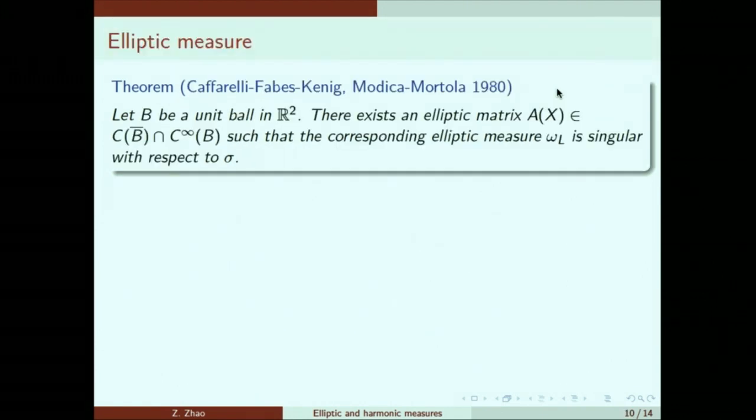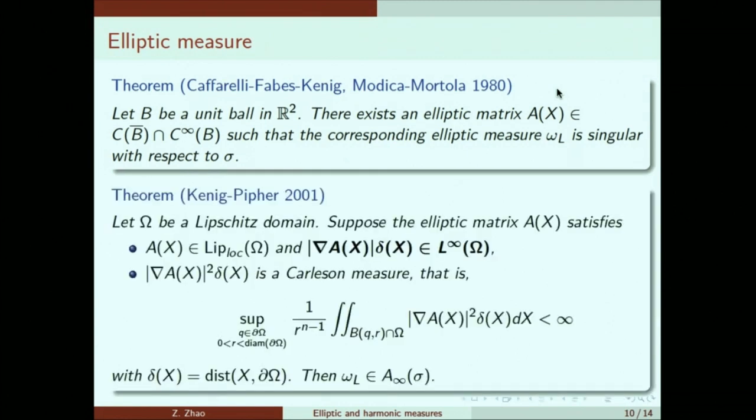When we come to elliptic measures, the situation is more delicate. Even if the domain is very nice, a unit ball, there are still elliptic matrices which are continuous all the way to the boundary and even C infinity on the interior. However, the corresponding elliptic measure is singular. You can imagine the problem happens when the elliptic matrix has high oscillation as we move closer and closer to the boundary.